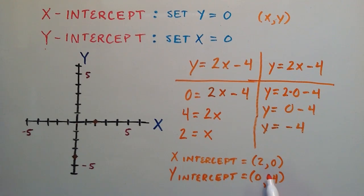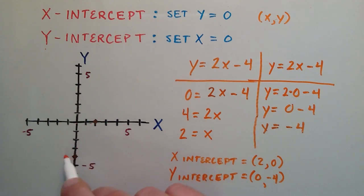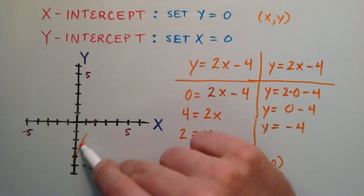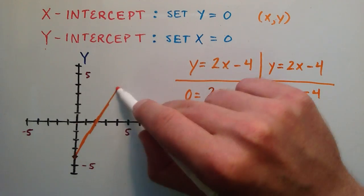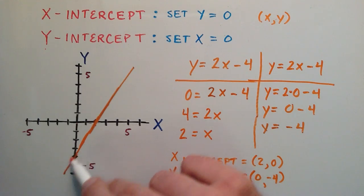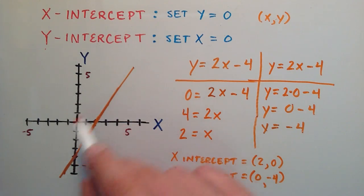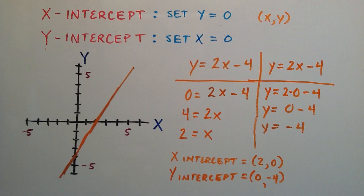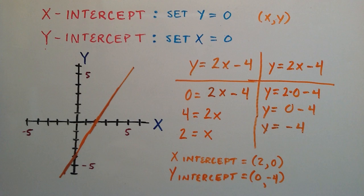We can now do a rough sketch of this line by connecting the x and y intercepts. Connecting these two dots gives us a rough sketch of what the line looks like — this is the line y is equal to 2x minus 4. So that was an introduction to finding the x and y intercept of a line. Thank you for watching. I'll go ahead and do another example in the next tutorial, so stay tuned. Have an excellent day, and don't forget to subscribe.